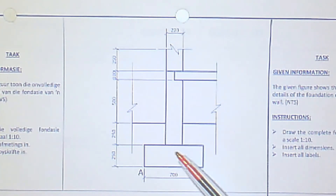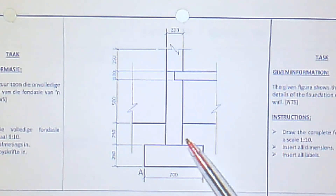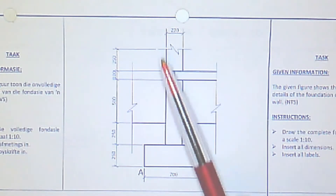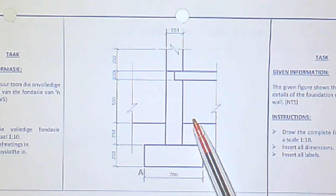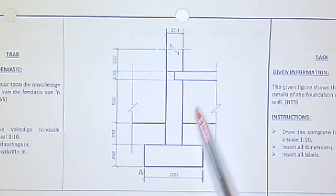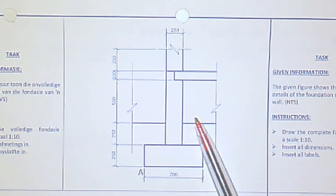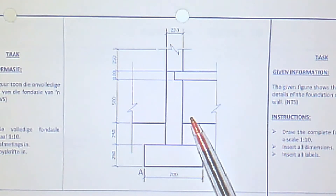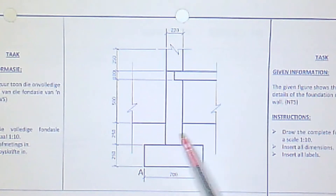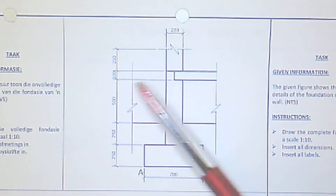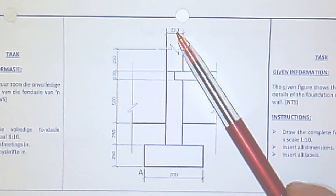Here we can see the foundation strip, and on top of that we have our outside wall with a thickness of 220. The area between the concrete and the NGL - the natural ground line - is what we call the compact hardcore filling. Underneath the NGL we have undisturbed earth on each side. So scaling: 220 divided by 10 is 22, 500 divided by 10 is 50, and so on.